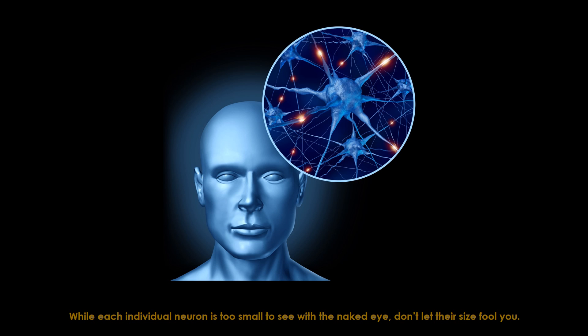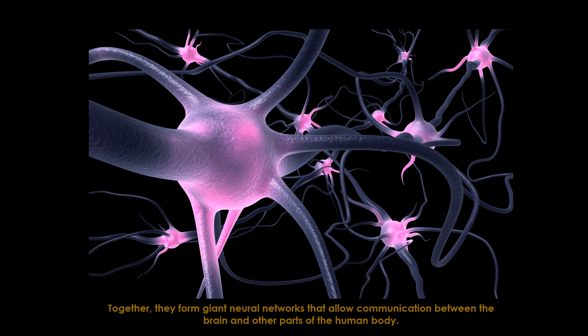While each individual neuron is too small to see with the naked eye, don't let their size fool you. Together they form giant neural networks that allow communication between the brain and other parts of the human body.